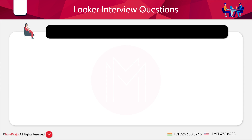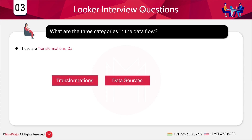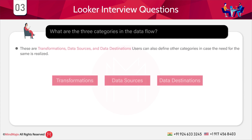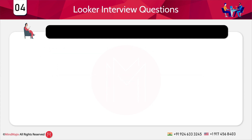The next question is: what are the three categories in the data flow? The three categories are transformations, data sources, and data destinations. Users can also define other custom categories in case the need is realized. However, it is not possible that all features work well in every custom category.